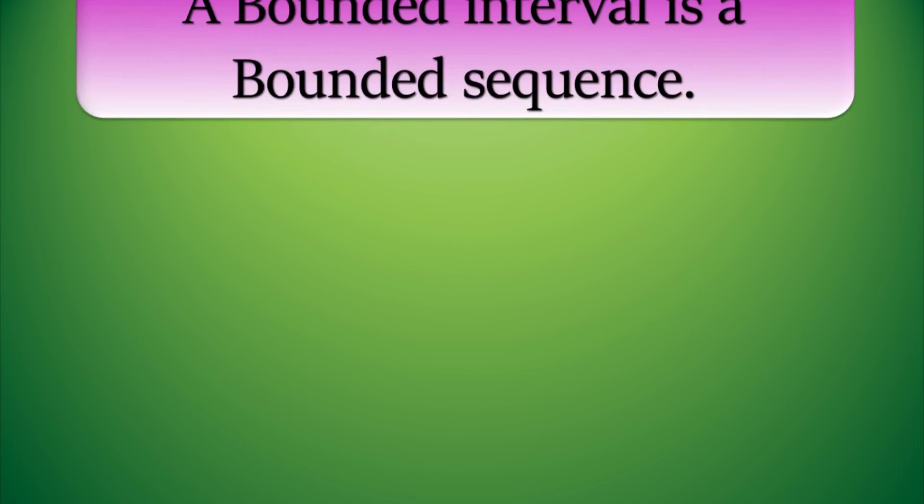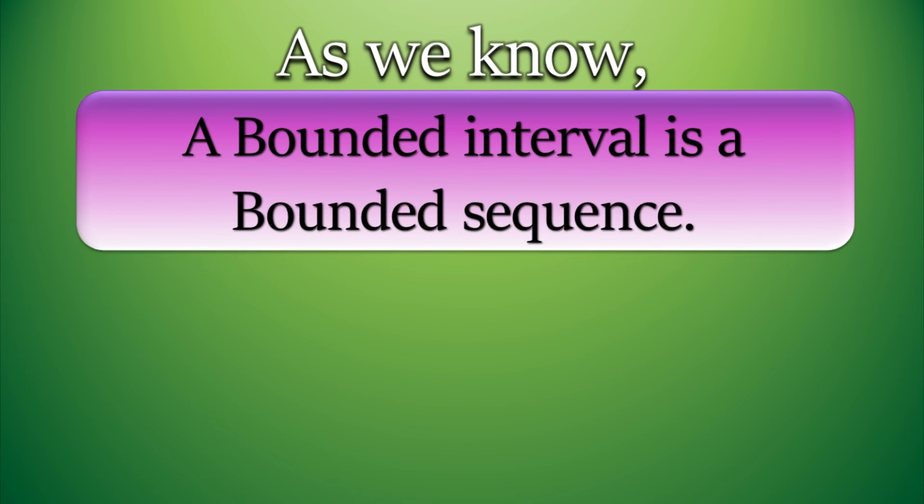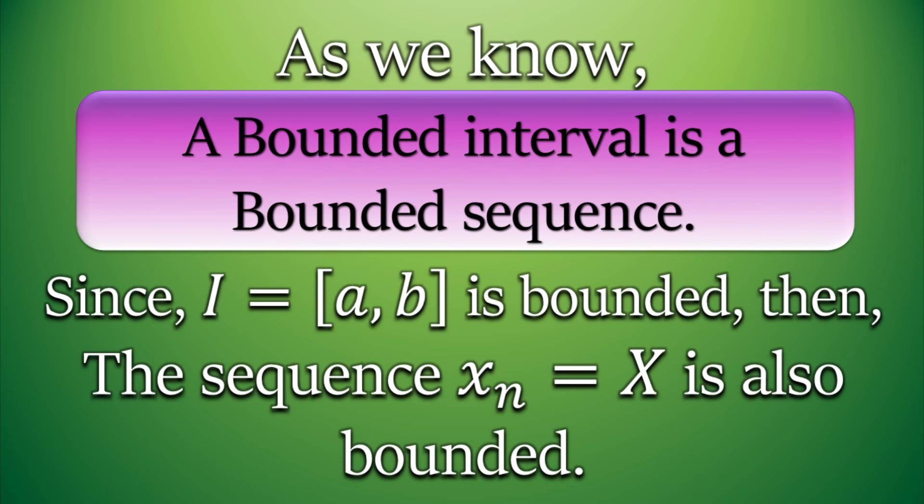Now we recall that a bounded interval is a bounded sequence. As the interval I is bounded, this implies that I is also a bounded sequence, and we call that sequence X with its values xₙ, but they are basically all the values of the interval I. We did all of this just to use the Bolzano-Weierstrass theorem to proceed further in the proof.